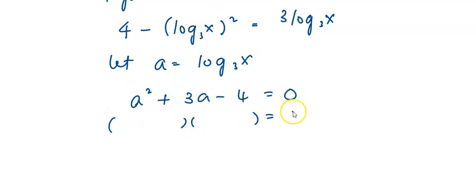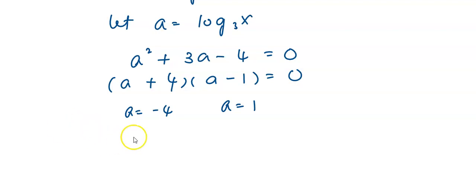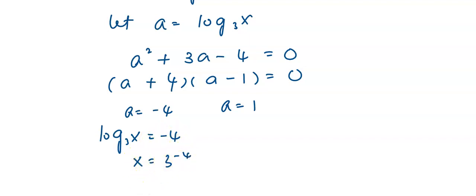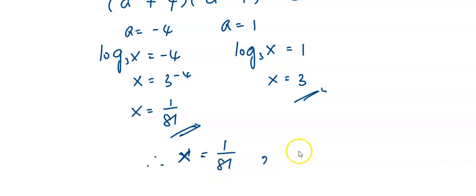Using the quadratic method to solve for a first: factorizing with 4 and 1 (positive and negative), I get a equals negative 4 and a equals 1. Substituting back a as log base 3 of x: the first x equals 1 over 81, and the second x equals 3. After checking, both answers are accepted as solutions. So x equals 1 over 81, or x equals 3.